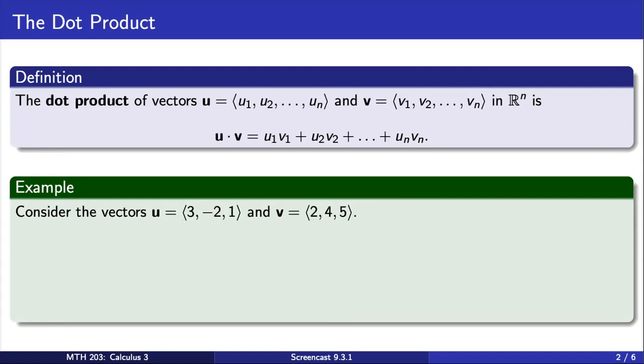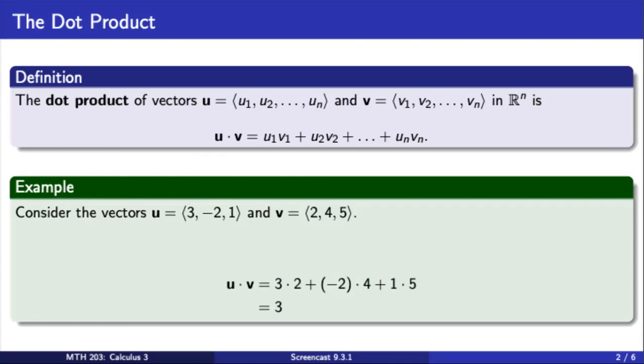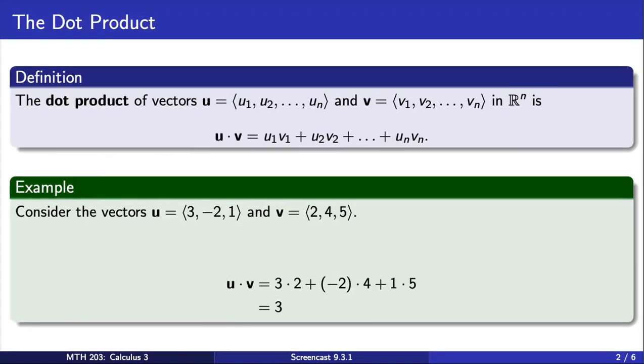For example, consider these three-dimensional vectors, u and v. To get the dot product of u and v, we are going to sum the product of the x components with the product of the y components with the product of the z components, and the result is the real number 3.